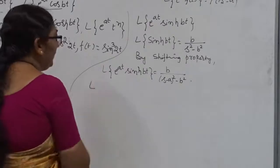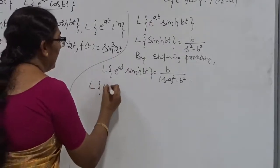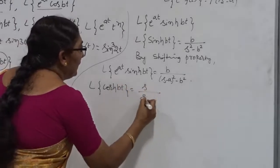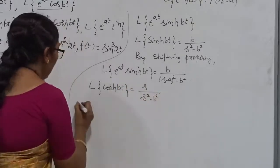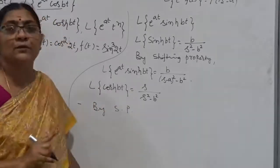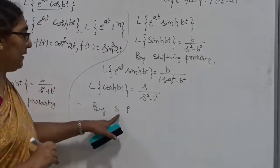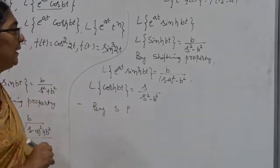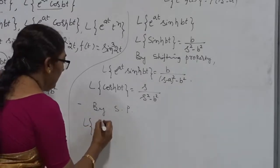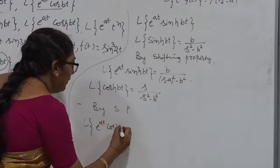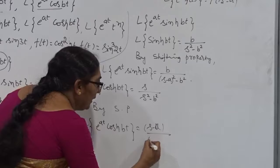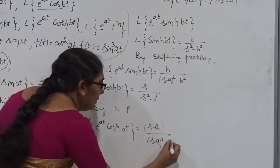Similarly, I have to find the Laplace Transform of e to the power At into cosh Bt. The standard formula for cosh Bt is s divided by s squared minus B squared. This implies, by the Shifting Property — please write the full name, Shifting Property, not abbreviations like S.P. — the Laplace Transform of e to the power At into cosh Bt is nothing but (s minus A) divided by (s minus A) squared minus B squared.